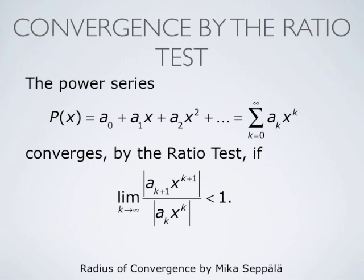Consider the power series p(x) equals a0 plus a1 times x plus a2 times x squared plus and so forth, that is p(x) equals summation k from 0 to infinity of a_k times x to the power k. This power series converges by the ratio test if the limit as k goes to infinity of the absolute value of the (k+1)th term divided by the absolute value of the kth term is less than 1. That is, if the limit as k goes to infinity of |a_{k+1} times x^{k+1}| divided by |a_k times x^k| is less than 1.